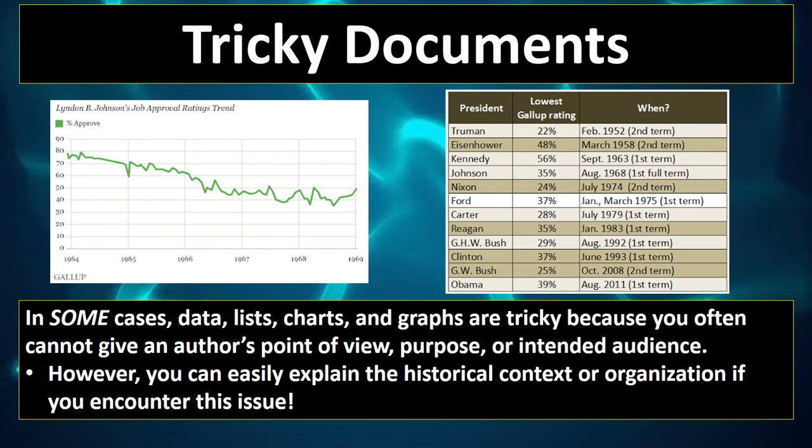Tricky documents: sometimes a curveball is thrown at you with some of the documents on a DBQ. What happens if you get data, graphs, and charts? Data and graphs can be tricky because you often cannot give an author's point of view, purpose, or intended audience when you're just given data. However, you can easily explain the historical context or the outside information — the O in HIPPO — if you encounter this particular issue.